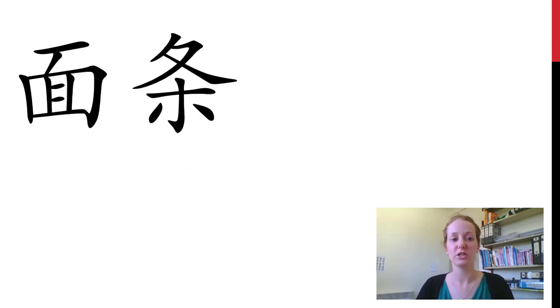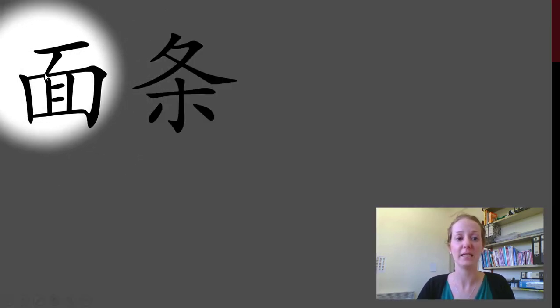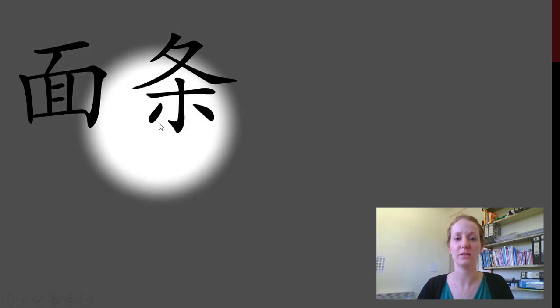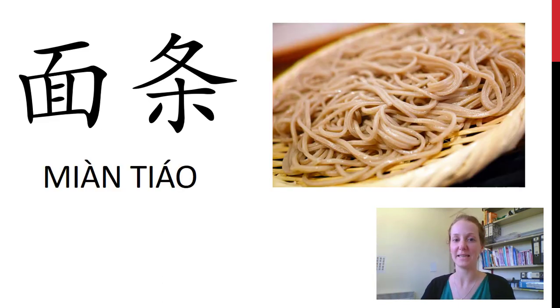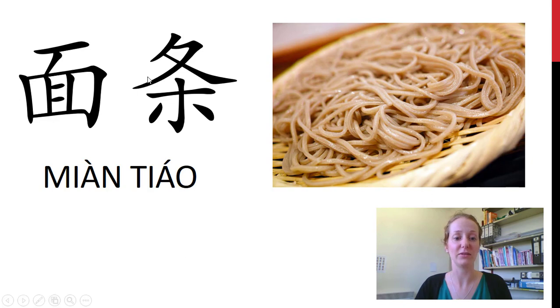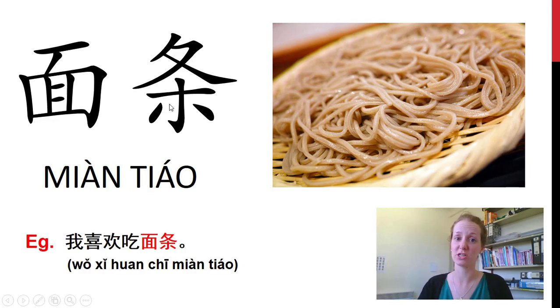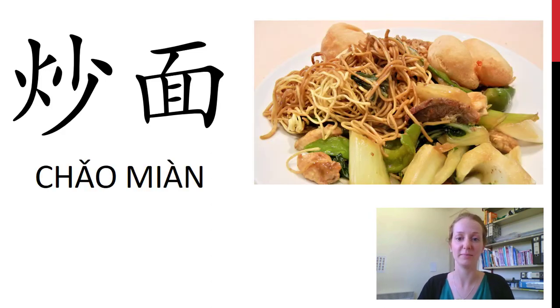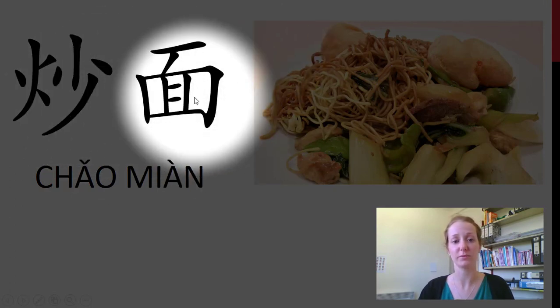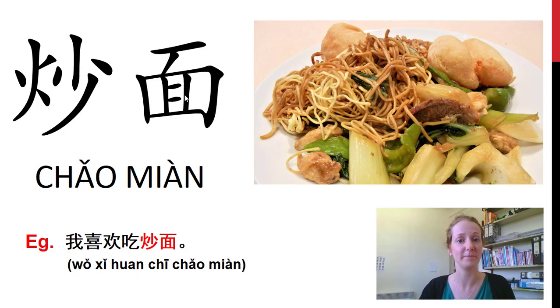我喜欢吃面包. 这是什么? We have our 面 again. This is a long skinny thing — remember 一条鱼. Something made of wheat that's long and skinny — any guesses? 这是面条 — noodles. We have our wheat and our long skinny thing. 我喜欢吃面条. How about our fried noodles? 炒面 — so we've got our fried and our noodles. 我喜欢吃炒面. 你呢?